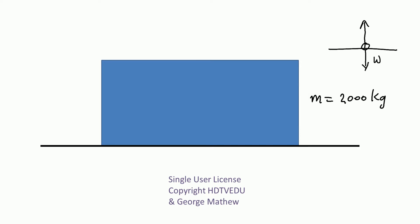What acts vertically up to balance the gravitational force? It is the normal force exerted by the surface on the object. So isolate the mass — look at the forces acting on the mass. We have gravitational force acting vertically down and normal force acting vertically up. We are told the mass is at rest, so the vector sum of forces is zero, meaning force up equals force down: normal force equals gravitational force.